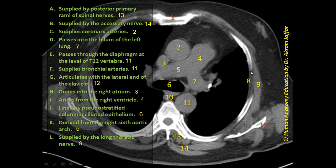Structure 8 is located between the ribs — there are thin muscle fibers that constitute the intercostal muscles. Structure 9, however, is located outside, attached to the ribs but not in between them, and this is the serratus anterior muscle.